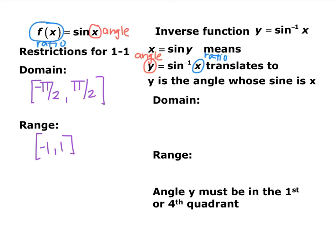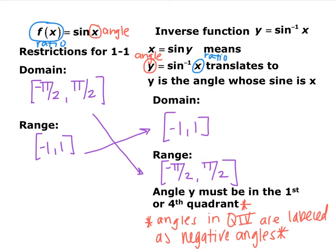Domain and range of inverse trig functions: the domain of a regular function becomes the range of its inverse, and vice versa. The domain of inverse sine — what you can plug in — is negative one to one, because that was the range of the original sine function. The range of inverse sine is negative π/2 to π/2, because that's the restricted domain of the original sine. So the angles you get out of inverse sine are either in the first quadrant or the fourth quadrant.